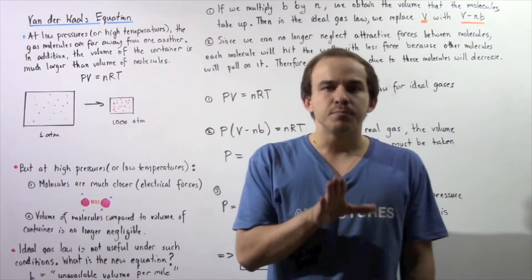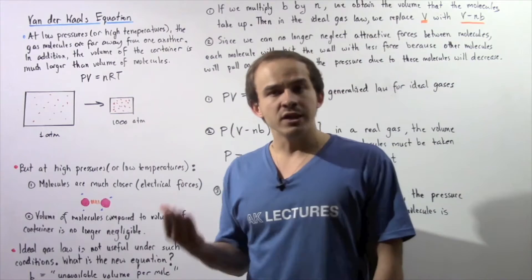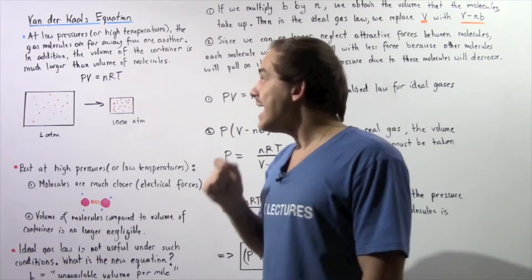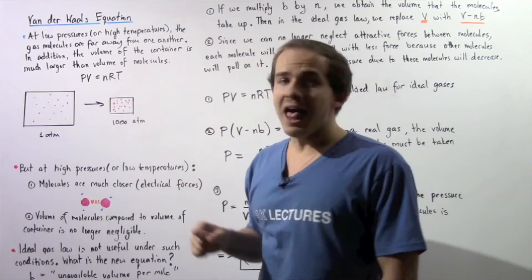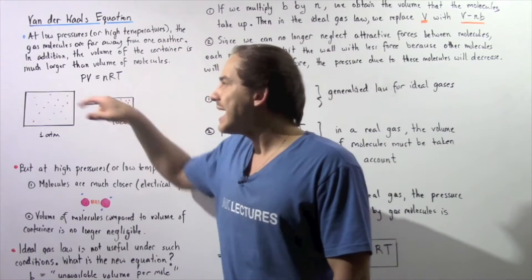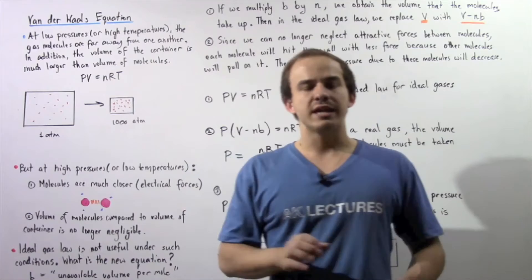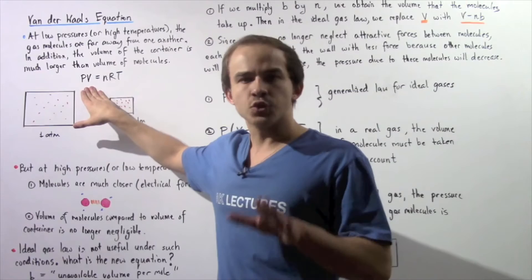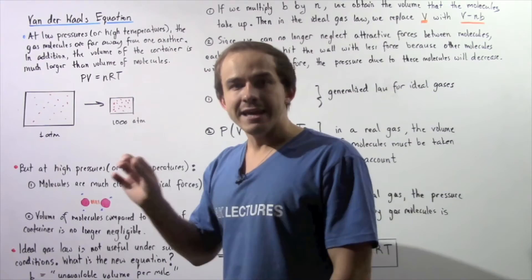The reason we can use the ideal gas law to explain the behavior of real gases under these conditions is because the distance between two molecules is very large, so we can neglect the electrical forces. In addition, the volume of the container is much larger than the volume that the gas molecules take up, so we can neglect the volume of our real gas molecules. Under conditions of low pressure and high temperature, the ideal gas law accurately describes real gas behavior.